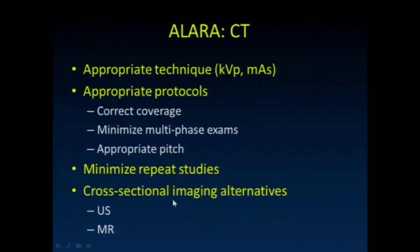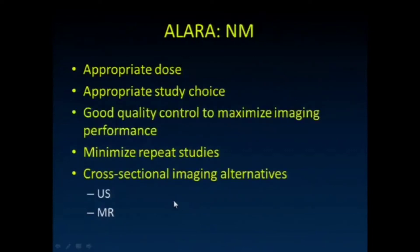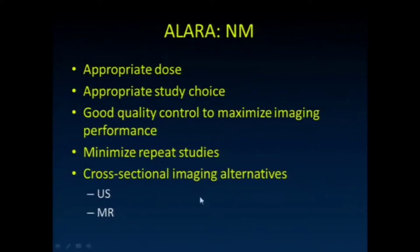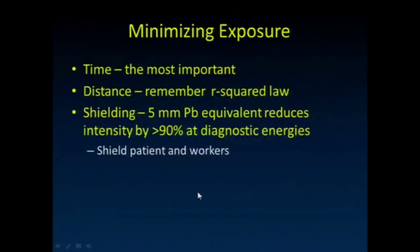Consider using cross-sectional imaging alternatives that don't involve ionizing radiation when appropriate. For nuclear medicine, we need to use the appropriate dose — one way to image faster is to give the patient a higher dose of radiopharmaceutical, but that results in a higher dose to them. Make sure we've got appropriate study choice, good quality control, and maximize the imaging performance of our gamma cameras, minimizing repeat studies. And of course, consider non-ionizing radiation alternatives.